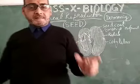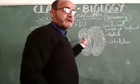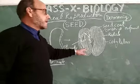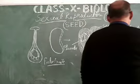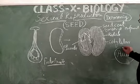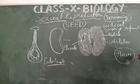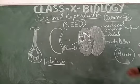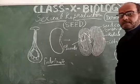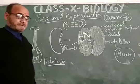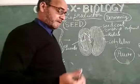But if this seed gets moisture, it starts germinating because of the activation of the hormone present inside it, and that hormone is called auxin. Auxin inside the seed gets activated by water and germination of the seed takes place.